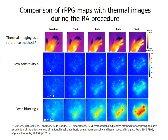We also studied how local anesthetics affect the microcirculation of the palm. The first row shows thermal images and the images below are rPPG maps, shown at 5 different time moments: before anesthesia, and at 2, 3, 5, and 9 minutes after anesthesia. Because the local anesthetic affects the sympathetic vascular tone, an increase of blood volume and subsequent temperature increase in palm tissue is observed. We used thermography as a reference method and compared it with rPPG. rPPG showed the same tendency as thermography.